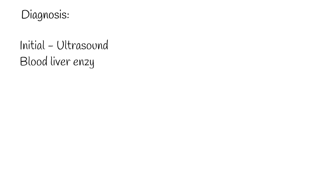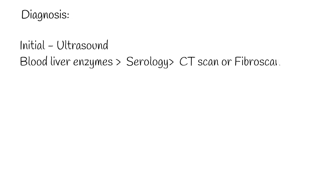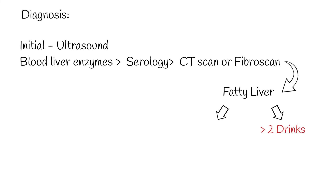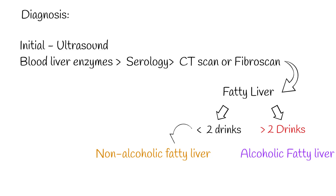For the diagnostic approach to a patient with fatty liver, initial tests include ultrasound and liver enzymes to determine liver function, followed by serology for evaluation of viral hepatitis. Imaging studies can determine fatty infiltration into the liver; CT scan or fibroscan may be used. After imaging confirmation of fatty deposition, we assess how much the patient drinks. More than 2 drinks of alcohol per day indicates alcoholic fatty liver; fewer than 2 drinks is diagnosed as non-alcoholic fatty liver. Most individuals are asymptomatic and are usually discovered incidentally due to abnormal liver function tests or hepatomegaly noted in unrelated medical conditions.